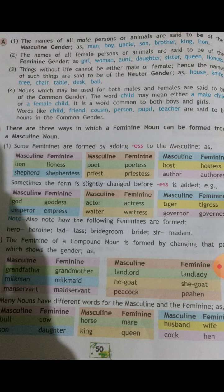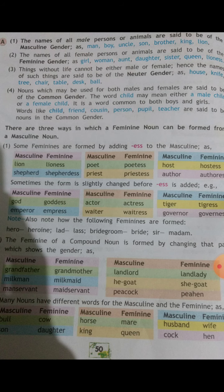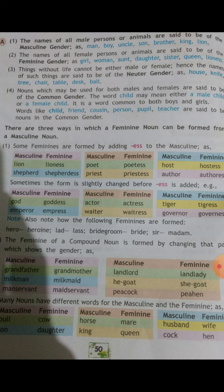The third way is the feminine of compound nouns. For example, in masculine gender: gentleman — feminine: gentlewoman. Grandfather becomes grandmother. Milkman becomes milkmaid, and so on.